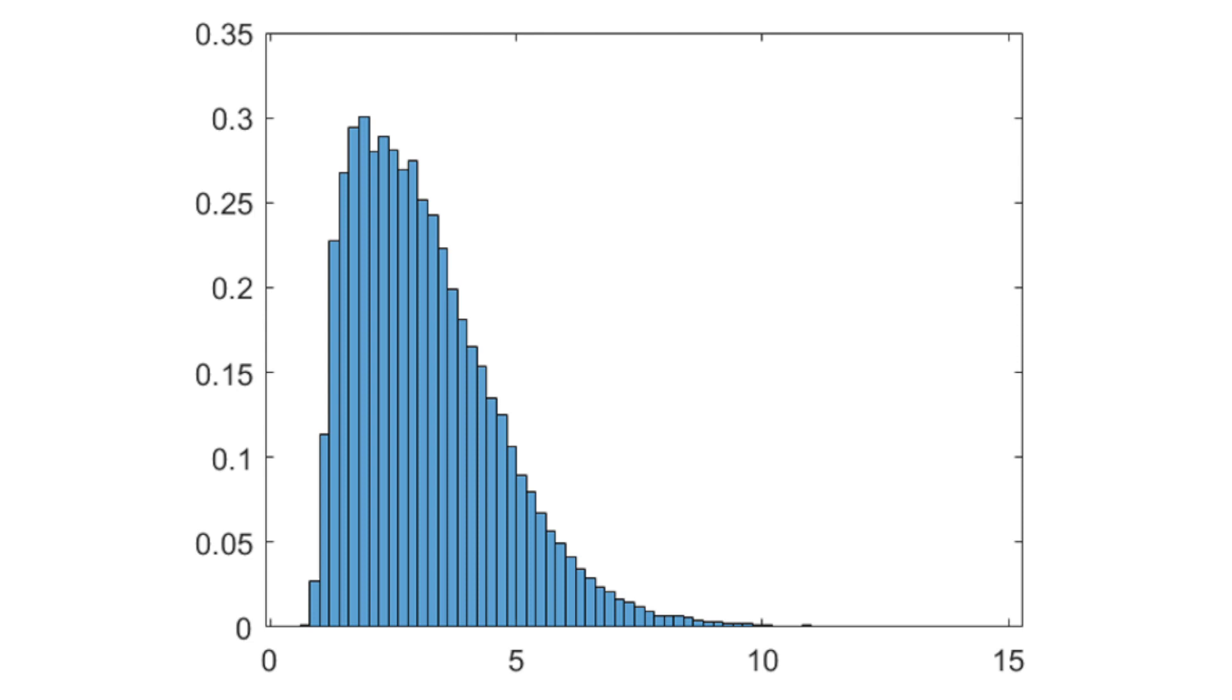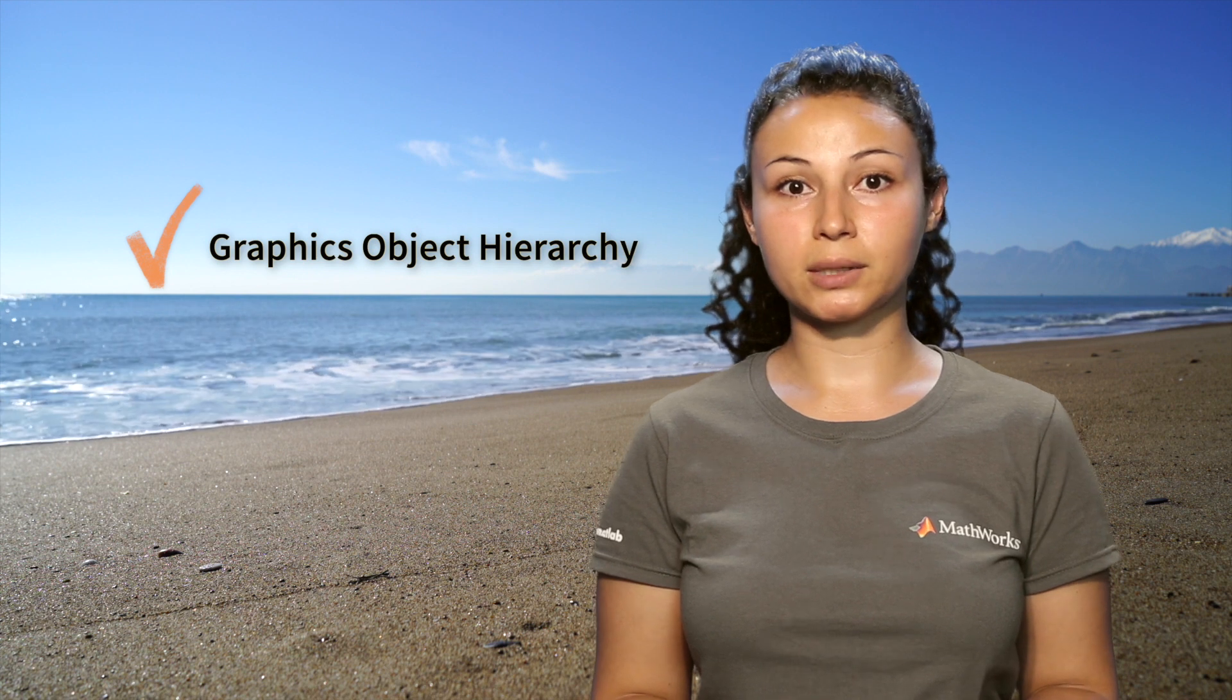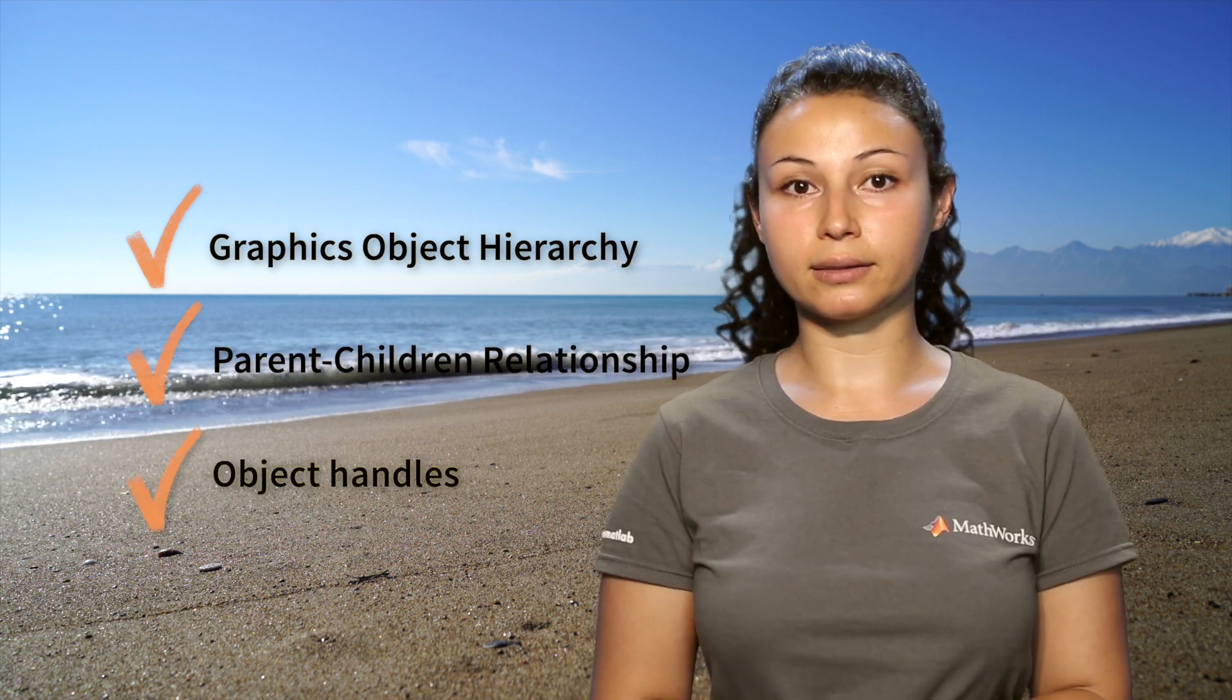So, I mentioned that I'm studying the ocean, and for that, I'm looking at wave height distributions. Therefore, I will create one main plot of a typical wave height distribution, and then zoom into the tail of the distribution in a second plot inside my main plot. How would this work? Well, I will use the graphics object hierarchy with a parent-children relationship and the object handles.